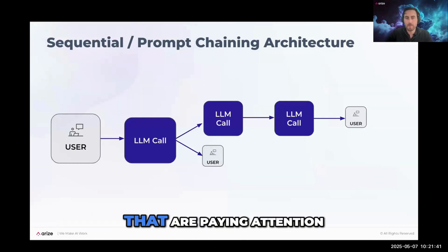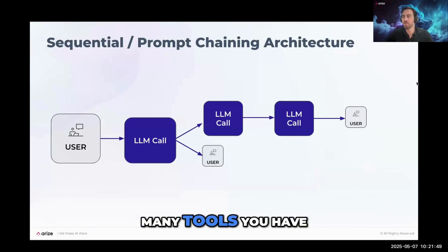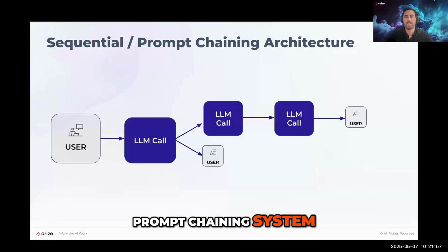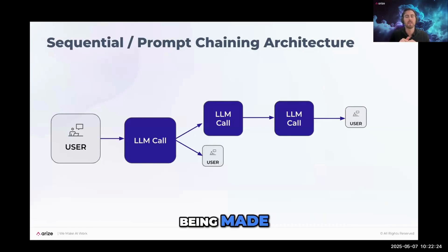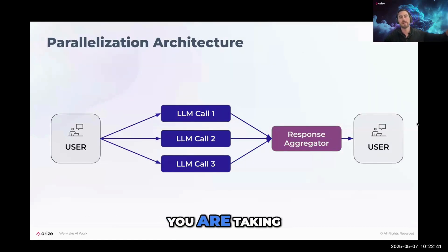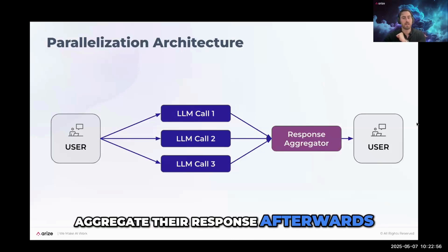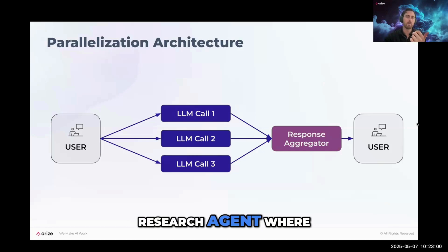You might have a decision gate within that chain — for instance, if there wasn't enough information found or the post quality isn't high enough, an LLM judges whether to abort or loop back and research again. Note there's some fuzziness between these architectures; a routing logic system can look very similar to a prompt chaining system depending on how many skills you have. This makes prompt chaining relatively simple to evaluate from a path perspective.